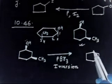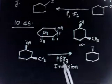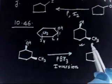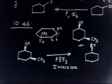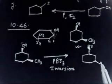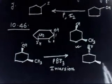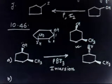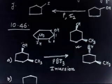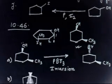Following the inversion: Br⁻, which was initially on the upside (as OH), will go to the downside, and CH3 remains as it is. That is the product for Part A.